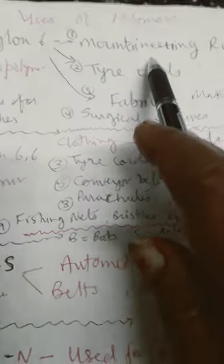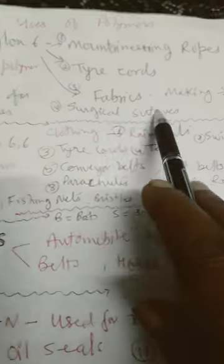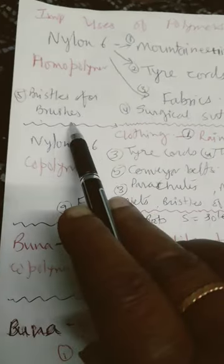Nylon 6 is used in making mountaineering ropes, tire cords, fabrics and sheets, surgical sutures, and fifth is bristles for brushes.